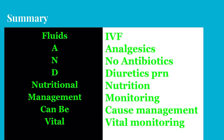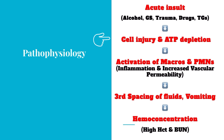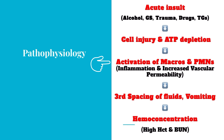To understand the treatment of acute pancreatitis, we have to go through the pathophysiology. The first thing that happens is an acute insult — from alcohol, gallstones, trauma, drugs, high triglyceride levels, or hypercalcemia. This leads to cell injury in the pancreas, ATP depletion, activation of macrophages and neutrophils, and inflammation causing increased vascular permeability.